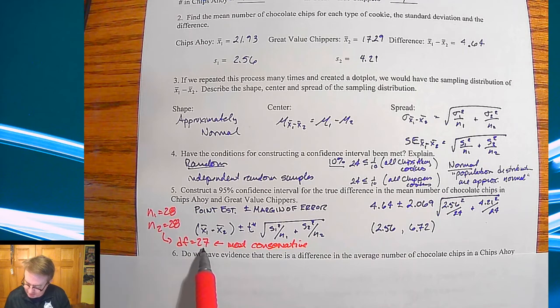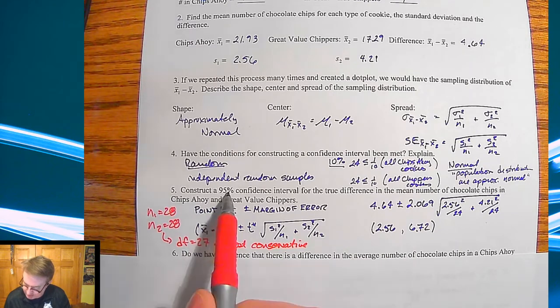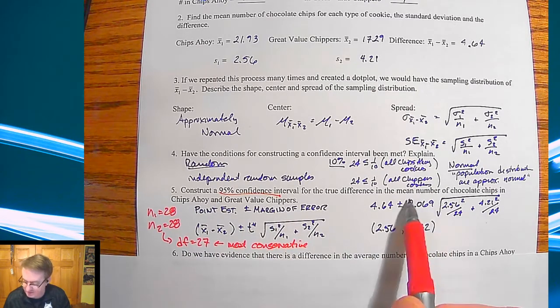And so when I do that, I look down for degrees of freedom of 27. I wanted to construct a 97% confidence interval. I got 2.069. So that's what I use there. Okay. Safe, easy, conservative. We know it's going to work.